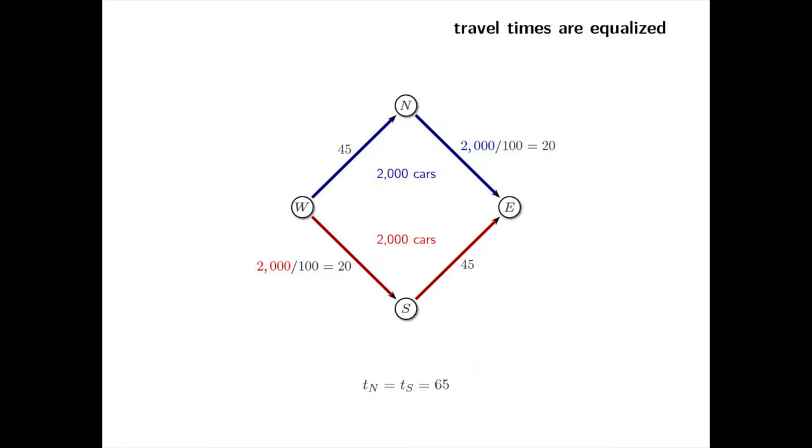Over time, this implies that each route should have about half the drivers. Each driver will spend 45 minutes on a highway and 20 minutes on busy streets. The total travel time for each resident would be 65 minutes.